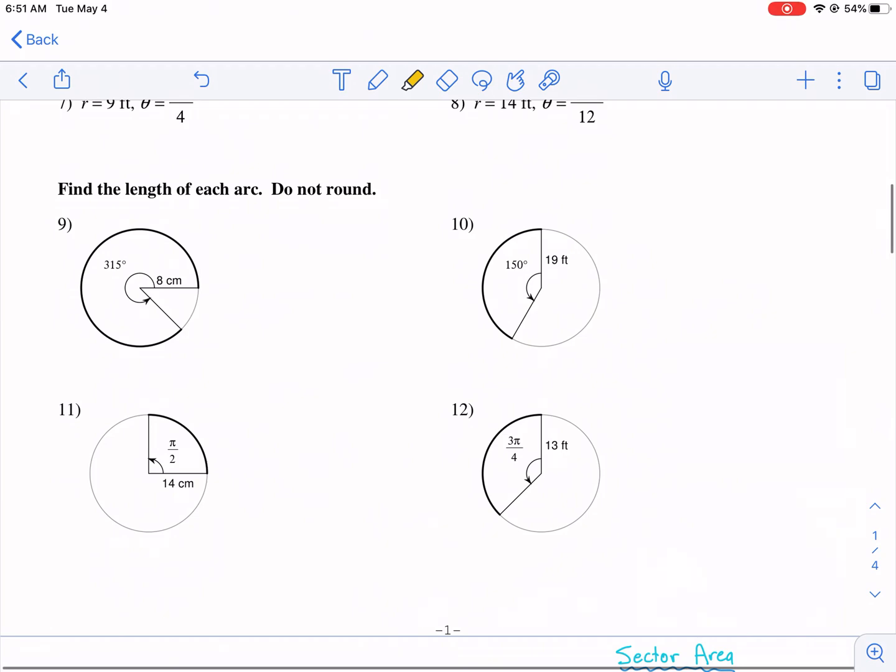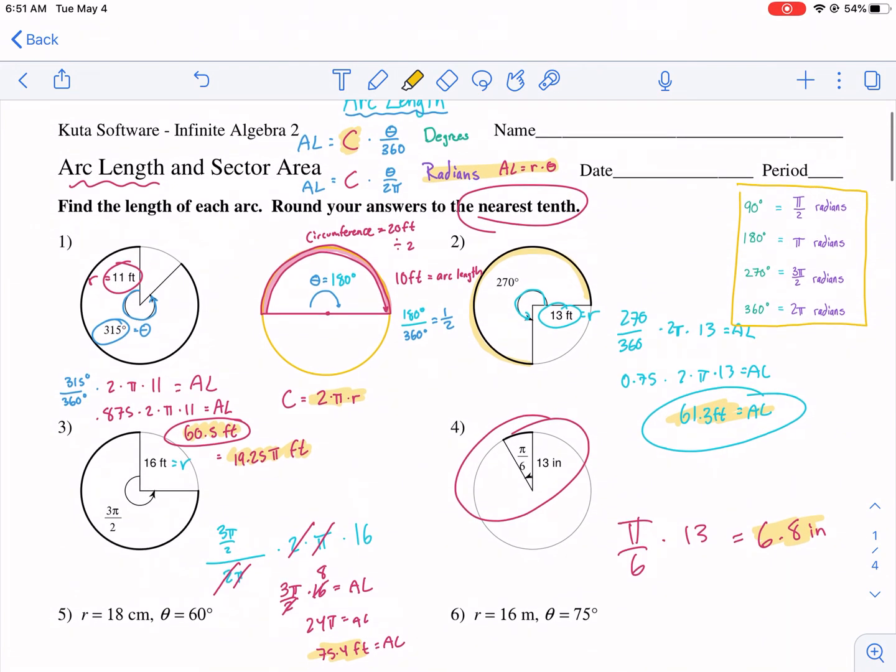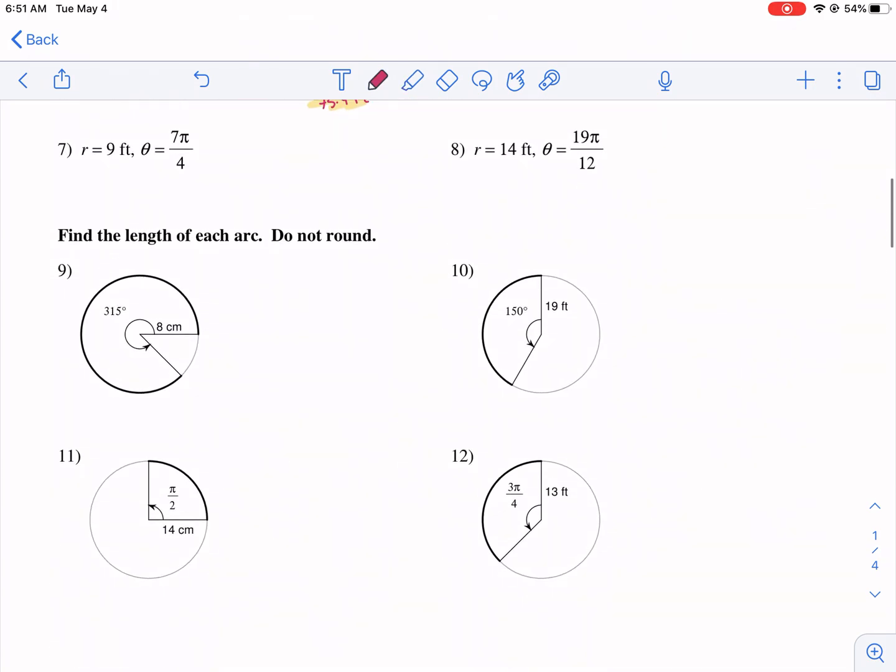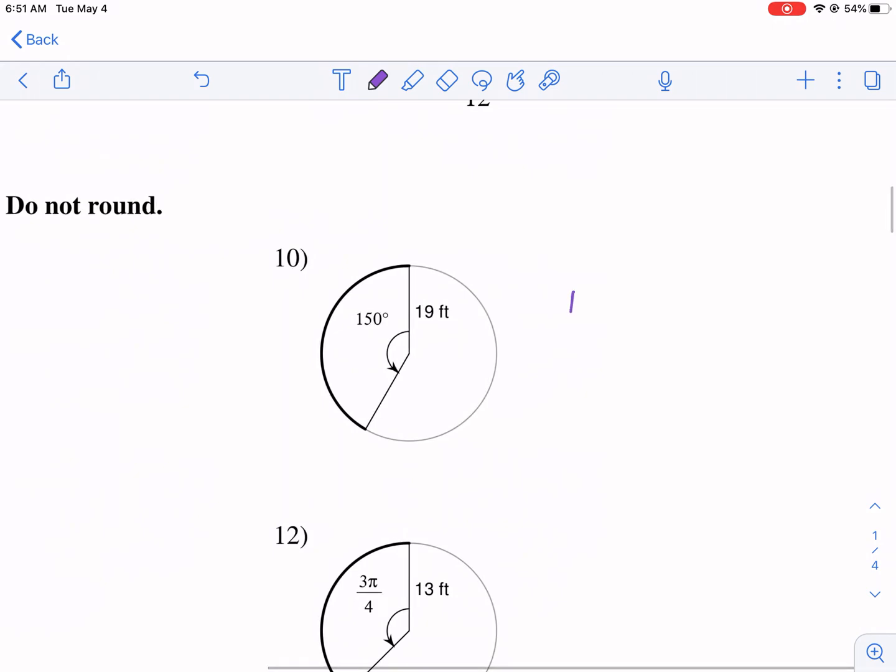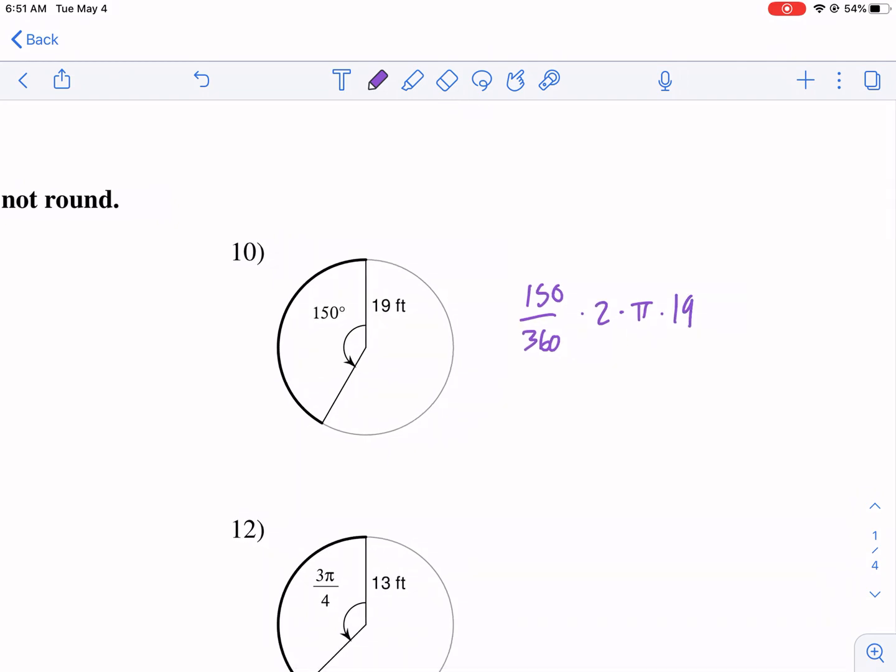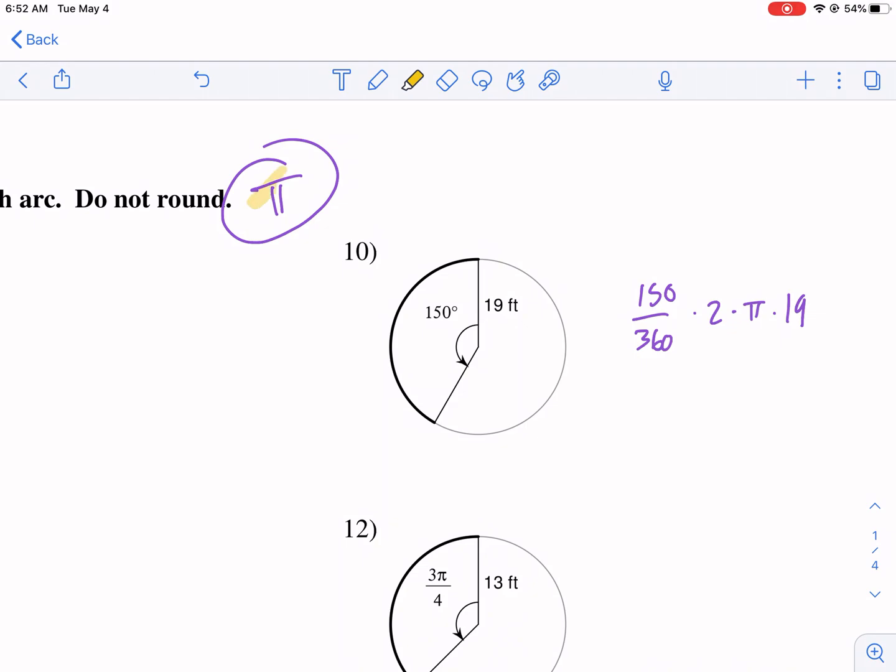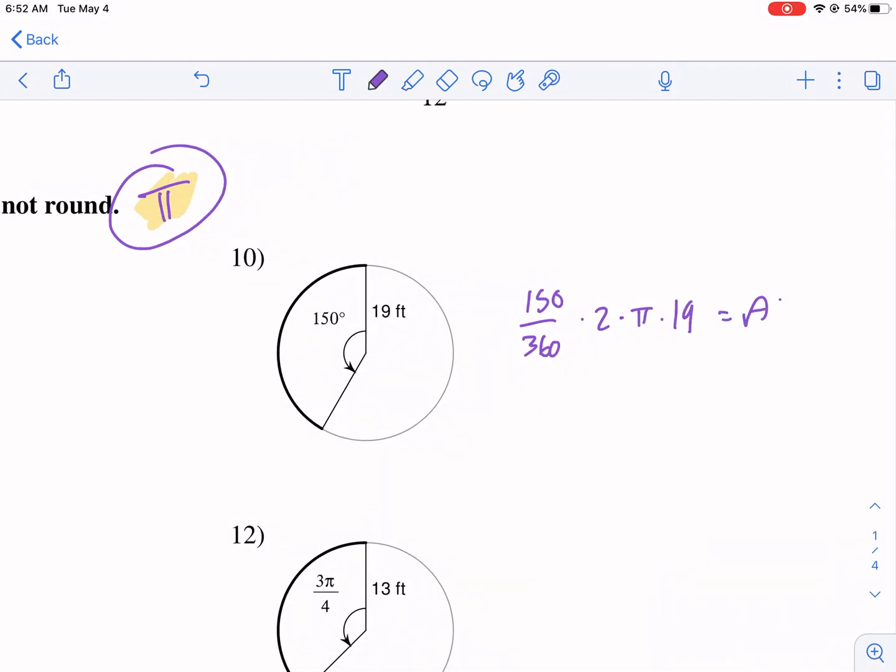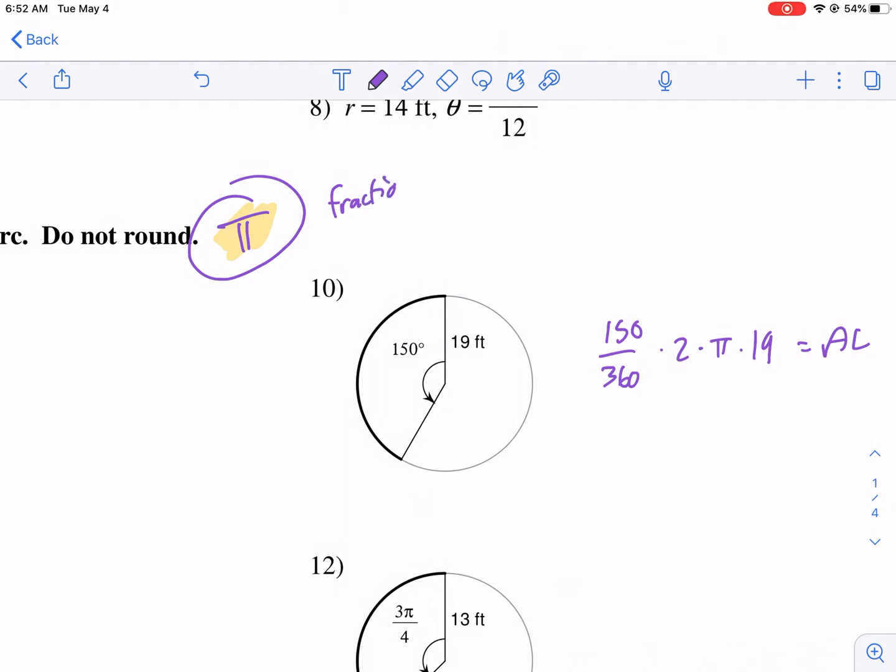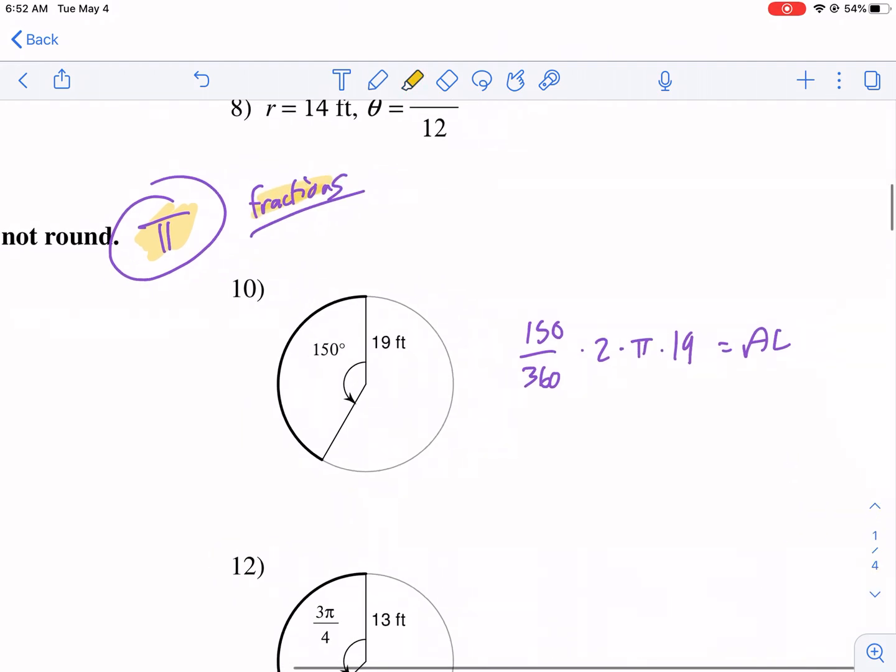Find the length of each arc. Do not round. So this is the same thing, but this one says do not round. So I guess it's a little bit more complex. Let's do two of them just for fun. I'm going to do this one on the right, number 10. So we have 150 divided by 360 times 2 times π times 19. And I'm not going to round. So that means I'm going to leave it in terms of π. As I type this in, it doesn't give us a lot of options. I think it wants us to leave it in terms of fractions. So we want fractions for this one, which is kind of ugly. Because I'm going to have to change this up a little bit.